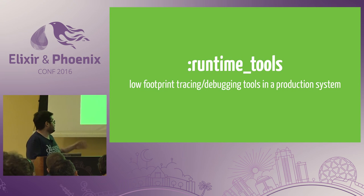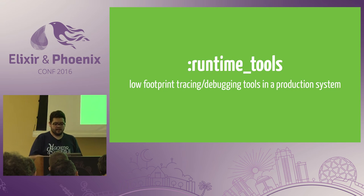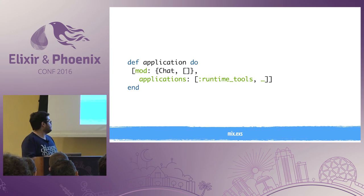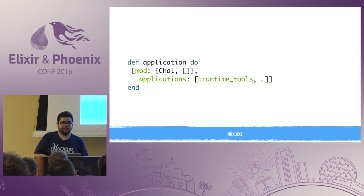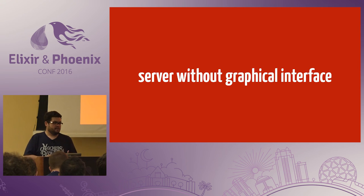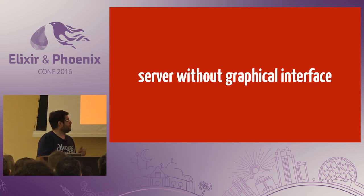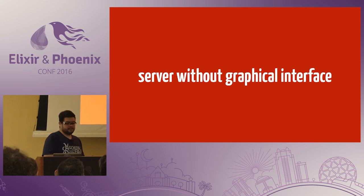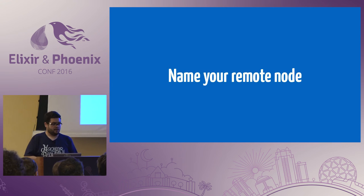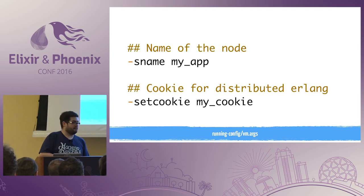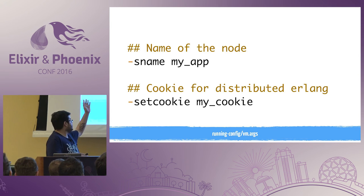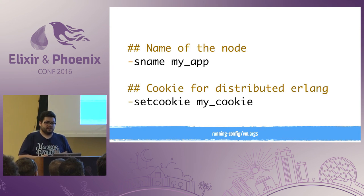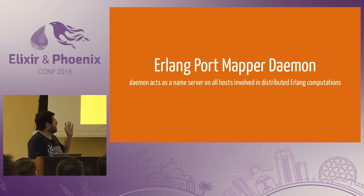So probably you will see this error — the observer is not available. To solve this you just need to add the application runtime_tools — it's a low footprint tracing and debugging tools library. You just need to change your mix file and add runtime_tools. Another error that I faced is because it's normal to use a server without a graphical interface. Sometimes we use a Linux distribution with Erlang. To solve this we need some steps. The first one is to name the remote node. When you create a package you have the file vm.args — for example, you can change the name and the cookie. This is important because Erlang has a daemon that acts as the name server: the Erlang Port Mapper Daemon, the EPMD.